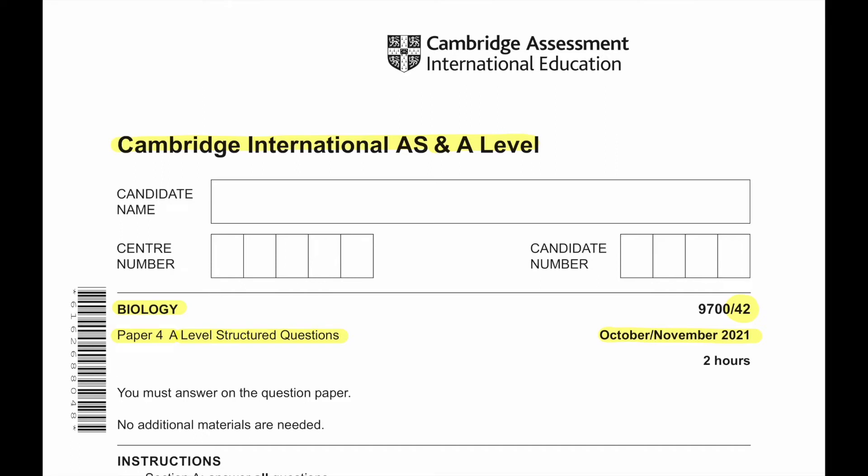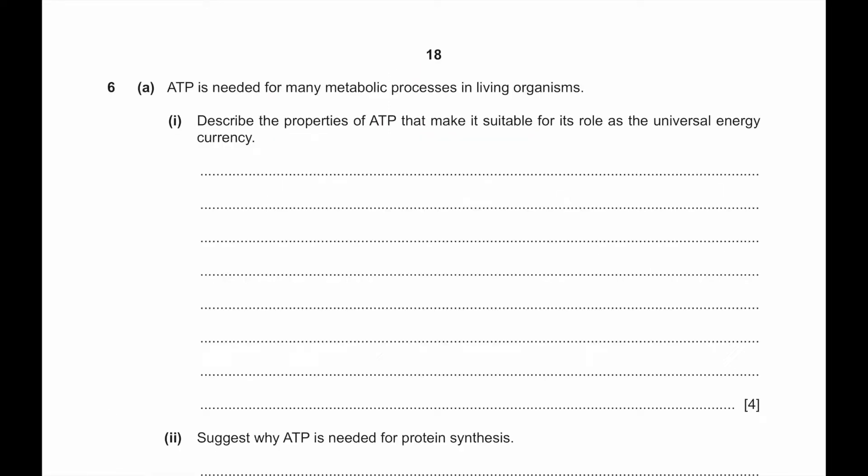Hello everyone, today we'll be solving Cambridge International AS and A Level Biology Paper 4 A Level Structured Questions October-November 2021 Paper 42. In this video we are going to be solving question number 6 to question number 10.